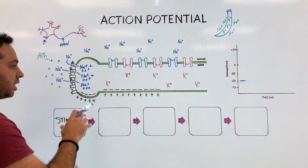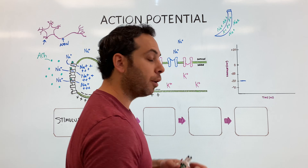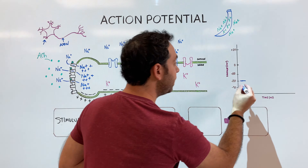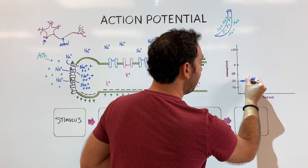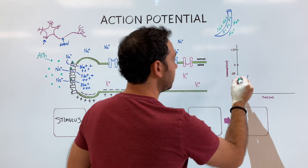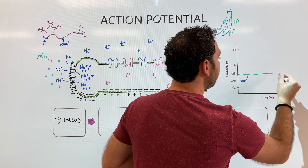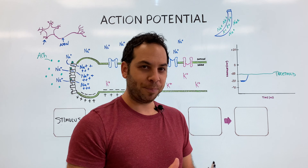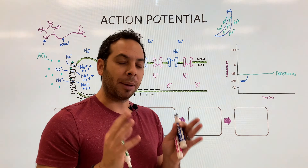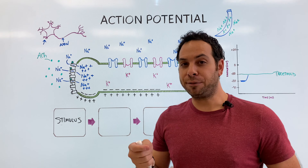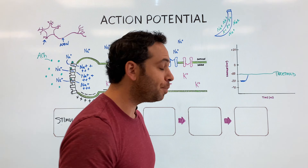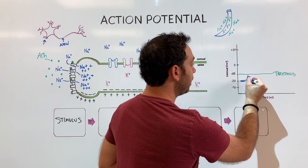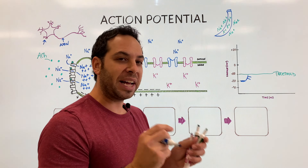As sodium rushes in, this area becomes extremely positive, and the voltage inside the neuron starts rising toward zero. It keeps climbing until it reaches negative 55 millivolts — this is considered the threshold. That's the magic number. If a neuron gets positive enough to reach negative 55, something amazing happens: the action potential is likely to fire. We call this the all-or-none principle, because if we do reach that threshold, the neuron is going to fire every time. Not every neuron reaches threshold — there could be false alarms — but if we do reach it, that's the magic number.